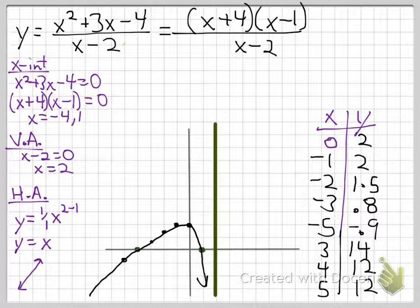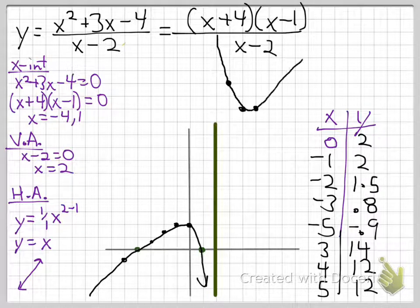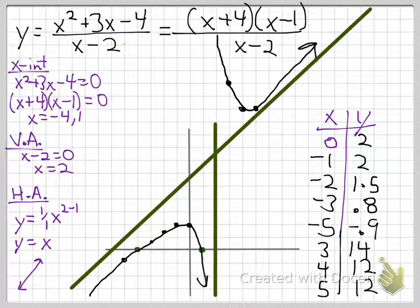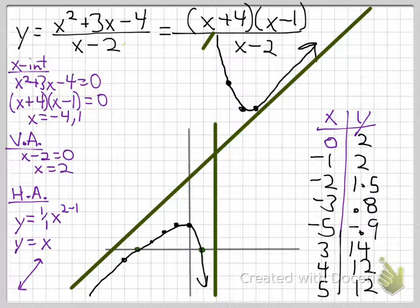We plot these points: x equals 3 at 14, x equals 4 at 12, x equals 5 at 12. The graph comes in from the asymptote and follows the end behavior of y equals x. Even without a horizontal asymptote, plotting enough points shows us where it goes. The graph goes up to the vertical asymptote and follows throughout, matching the y equals x end behavior.